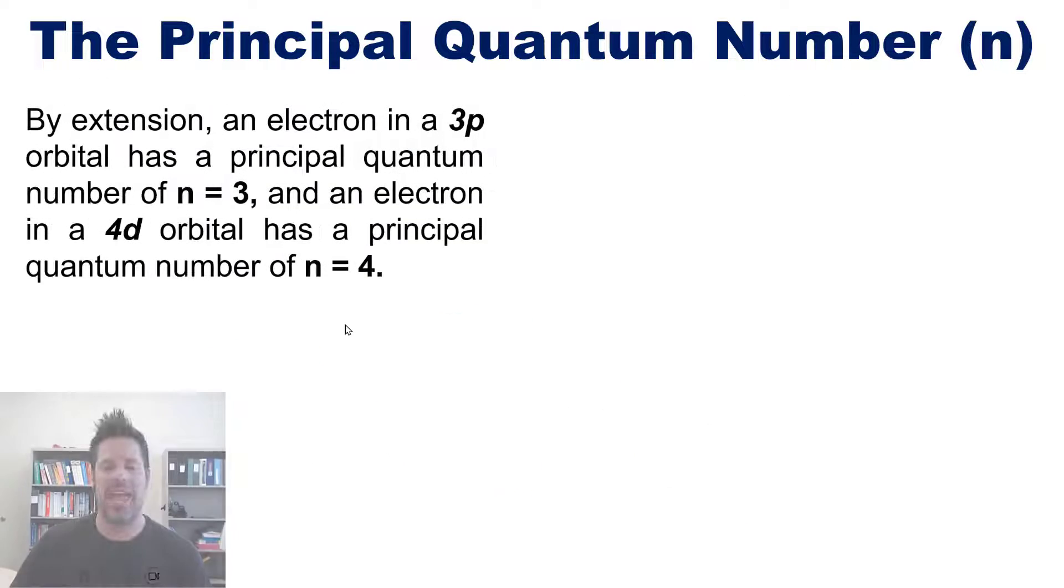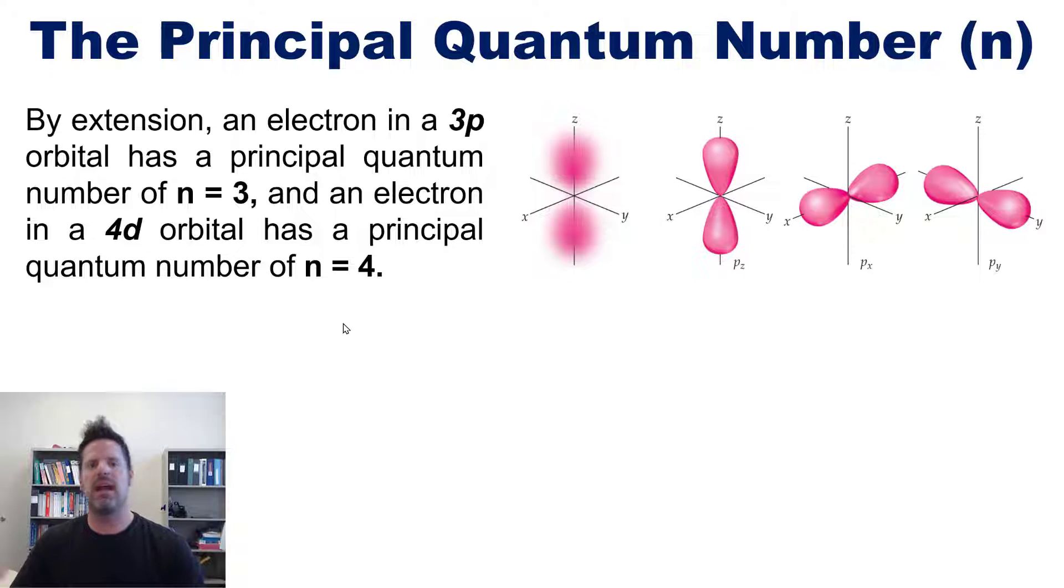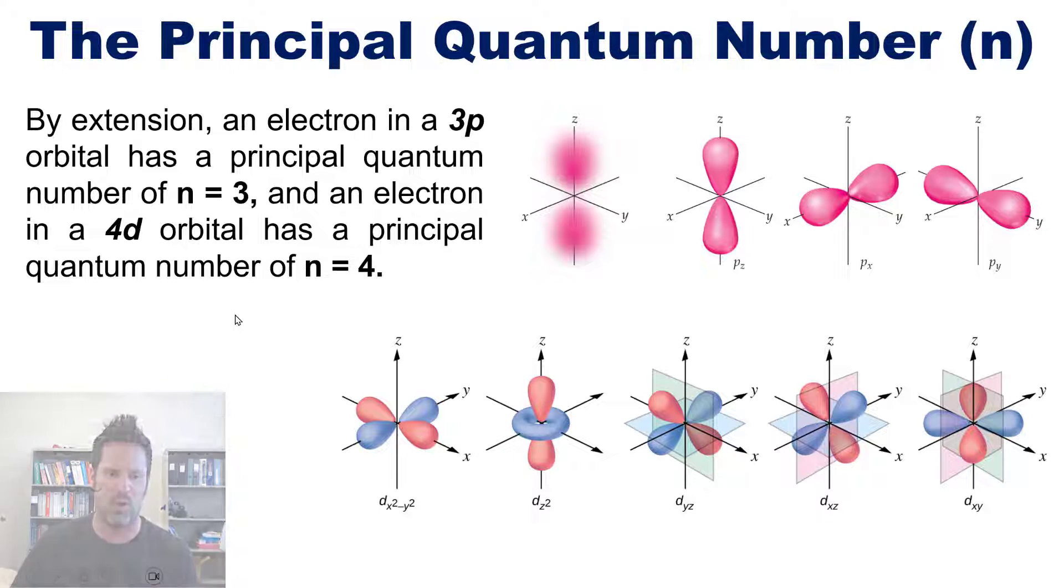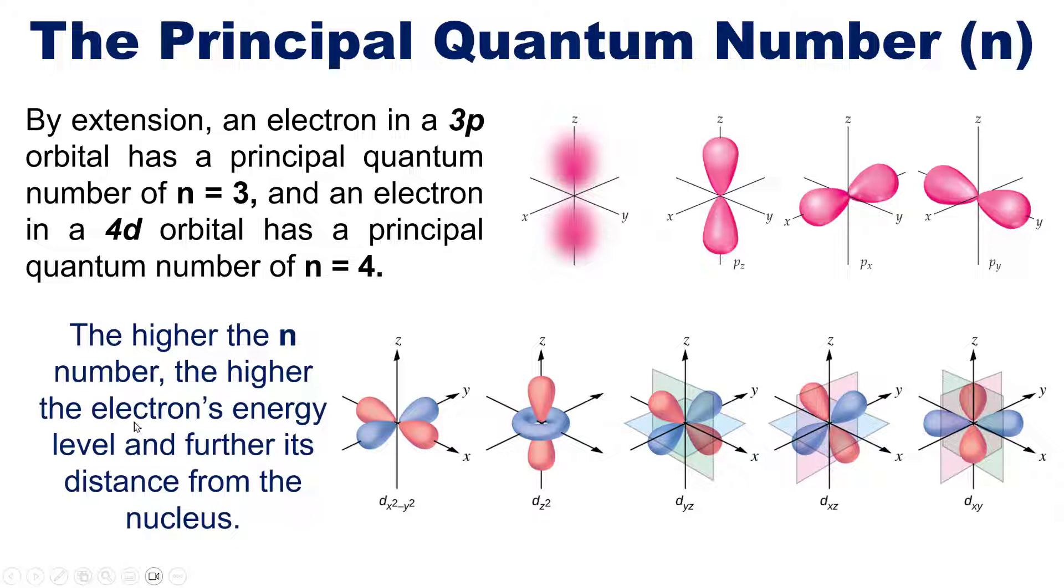By extension, an electron in a 3p orbital has a principal quantum number of n equals 3, and an electron in a 4d orbital has a principal quantum number of n equals 4. The higher the n number, the higher the electron's energy level and the further its distance from its nucleus.